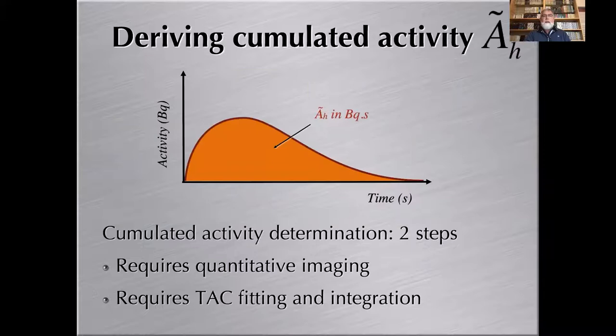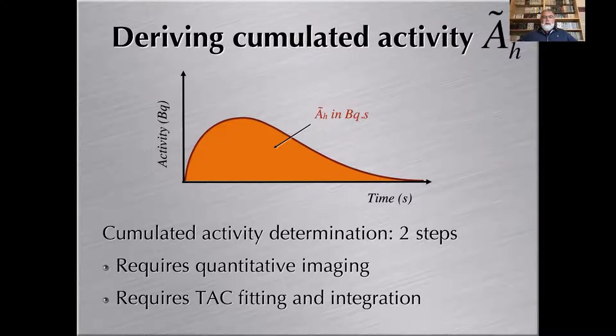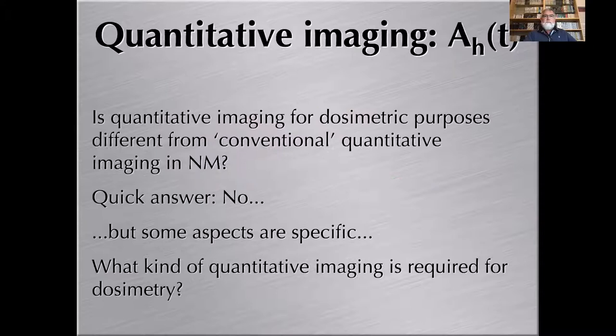The accumulated activity is the integration of the time activity curve. So it means that we need to implement quantitative imaging — being able to compute the activity present in the different tissues of a patient in space, all along the pharmacokinetics, so that's in time. Once you have the time activity curve for every source of interest, then you have to be able to fit and integrate the time activity curve. Quantitative imaging is how to get the activity in source H at time T.